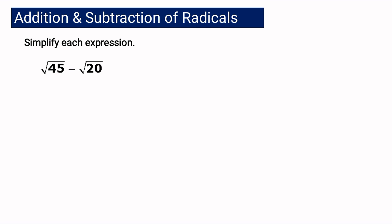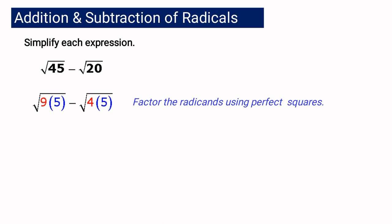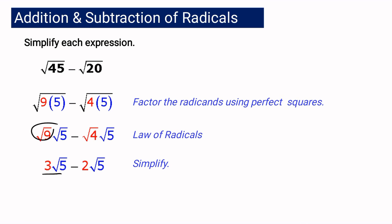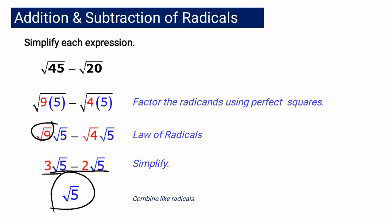Before we conclude that they are unlike, we have to simplify first. If you have square root of 45, the correct factors are 9 times 5 — 9 is a perfect square. And 20 can also be expressed as 4 times 5, and 4 is a perfect square. Using the law of radicals, we can write square root of 9 times 5 as square root of 9 times square root of 5, and square root of 4 times 5 as square root of 4 times square root of 5. Simplifying: square root of 9 is 3, and square root of 4 is 2, giving us 3 square root of 5 minus 2 square root of 5. We now have like radicals, and the answer is 1 square root of 5 — or simply square root of 5, since the coefficient of 1 is understood.